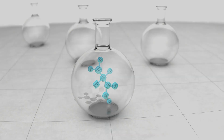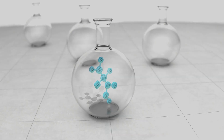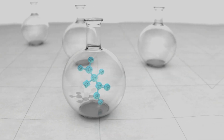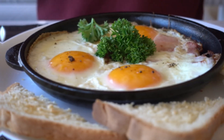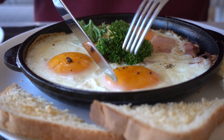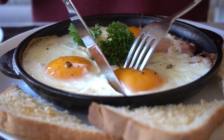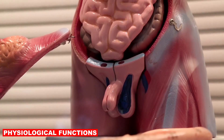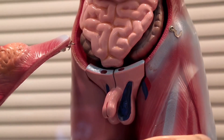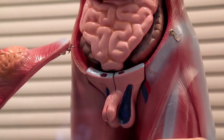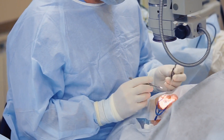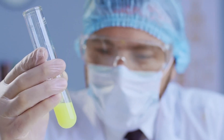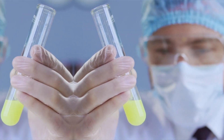Amino acids are organic compounds that serve as the building blocks of proteins in living organisms. They are crucial for various physiological functions, including growth, repair, and maintenance of tissues, enzymes, hormones, and other essential molecules in the body.